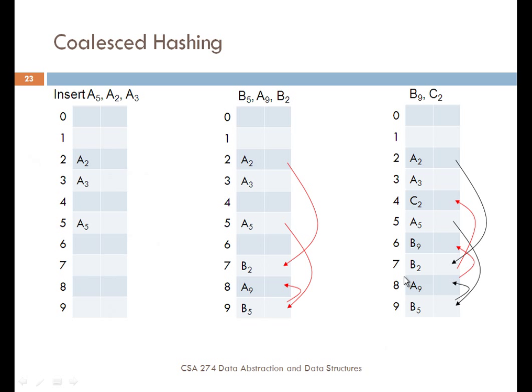There's another approach called coalesced hashing where you basically store elements using the same basic idea of having a linked list. But instead of creating a separate linked list, you actually store the elements in the array at a different location rather than a contiguous location. With coalesced hashing, when you encounter a collision, you store the next element at the end of the array — in the very last location — but then have a pointer from the place where it hashed to indicate that it wasn't stored in that location but in some other location.